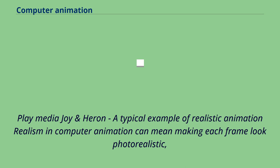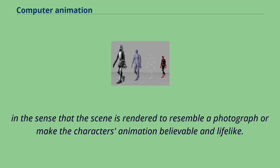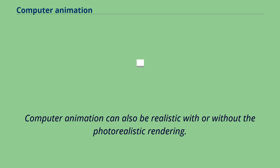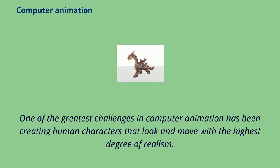Realism in computer animation can mean making each frame look photorealistic, in the sense that the scene is rendered to resemble a photograph, or making the character's animation believable and lifelike. Computer animation can also be realistic with or without photorealistic rendering. One of the greatest challenges in computer animation has been creating human characters that look and move with the highest degree of realism.